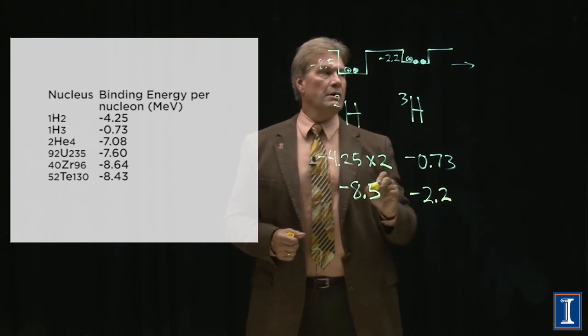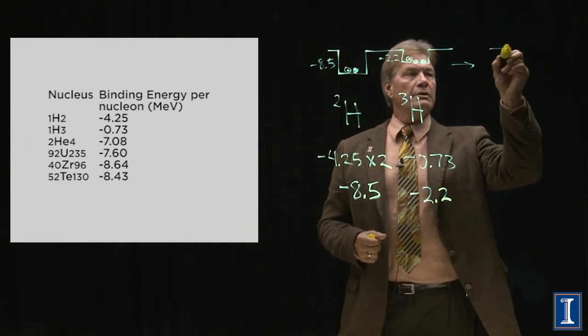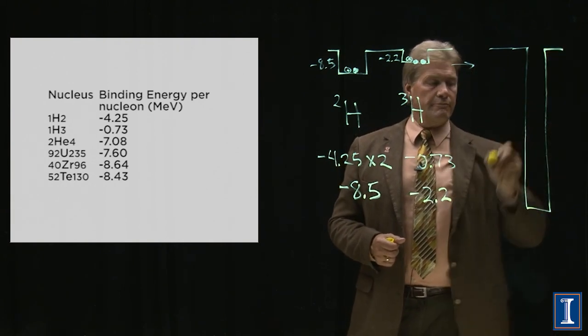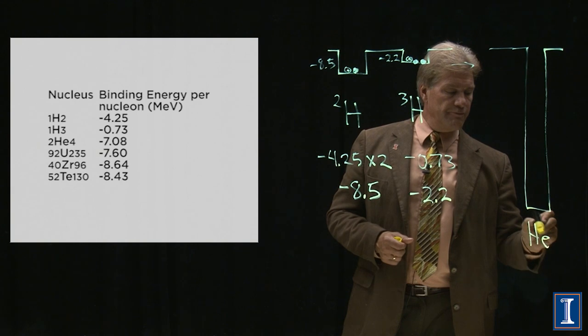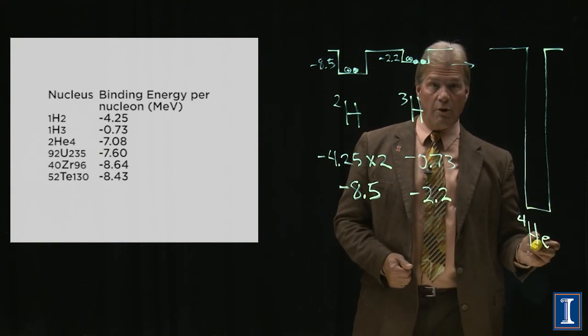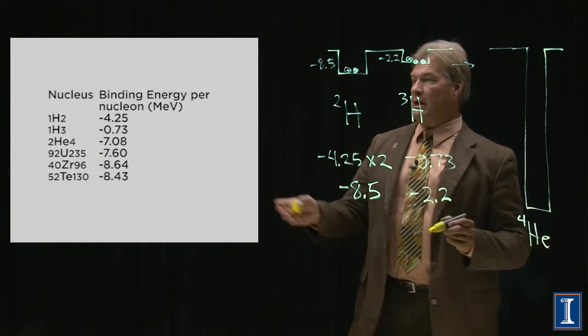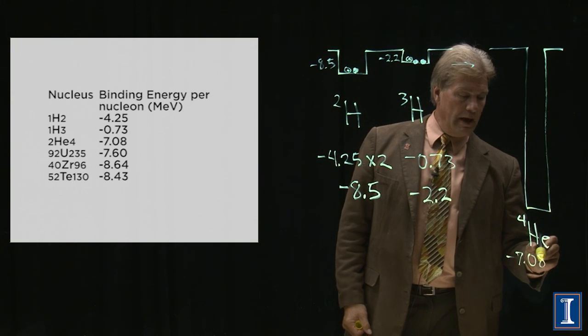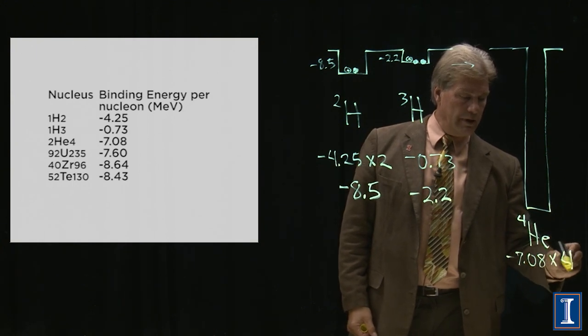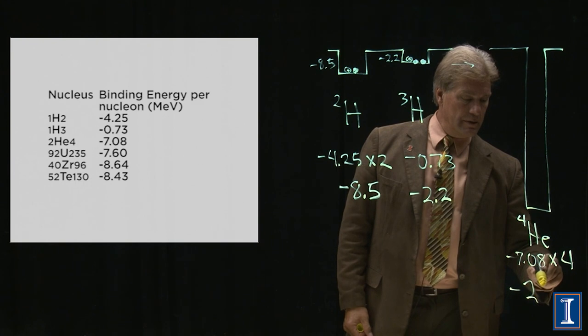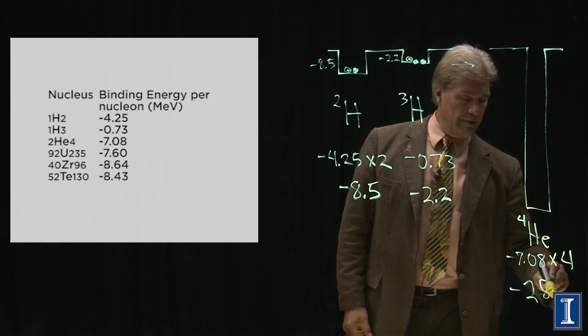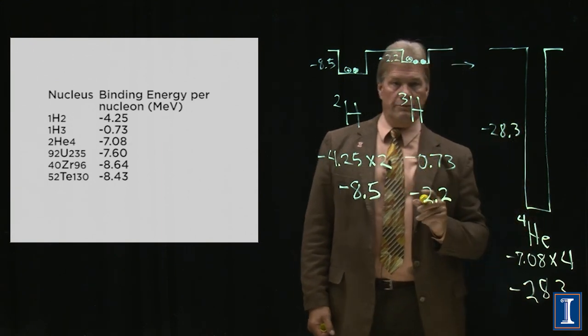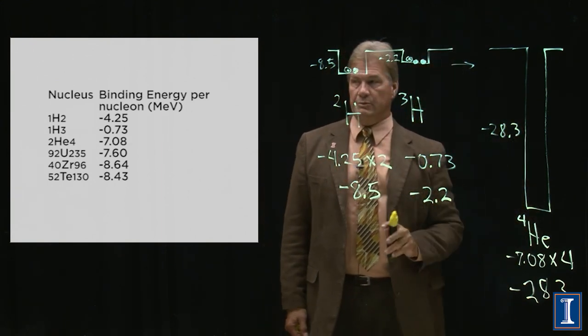What does this turn into? It turns into a free neutron, and it turns into helium. Standard, fill up my balloon with helium-4. Its binding energy per nucleon, minus 7.08, but there are four nucleons, so this is minus 28.3. Very deep well, very tightly bound nucleus, minus 28.3.